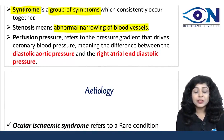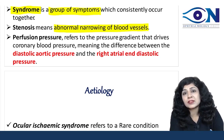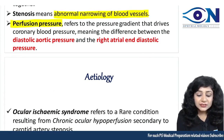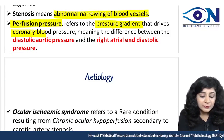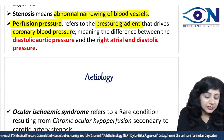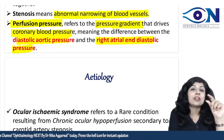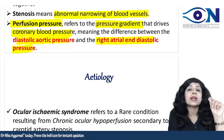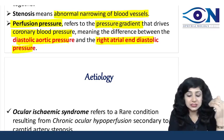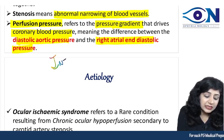These are common terms you'll hear when discussing ocular ischemic syndrome. Perfusion pressure means the pressure gradient driving coronary blood flow — the difference between diastolic aortic pressure and right atrial end-diastolic pressure. This term is very important from your physiology and medicine perspective, and you can get an integrated question on it.